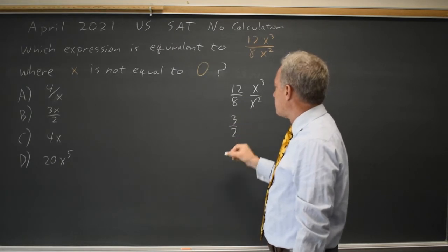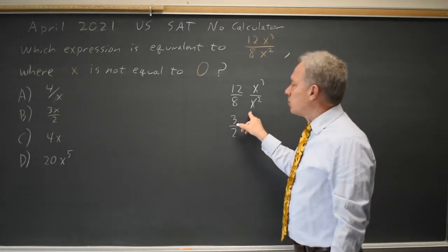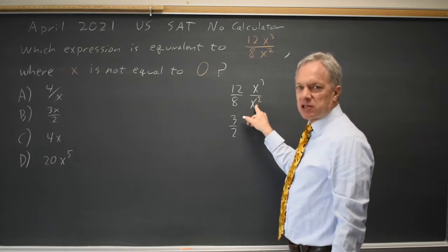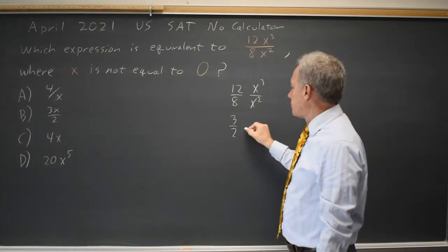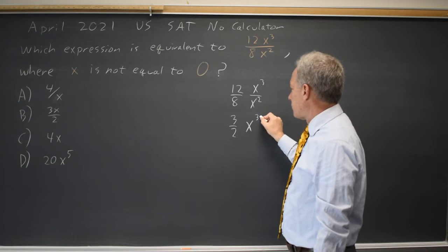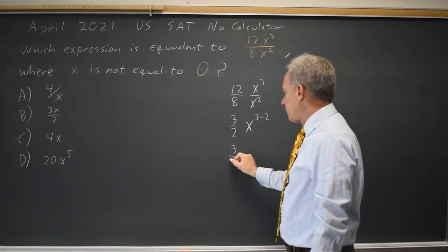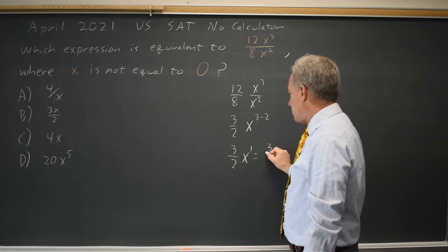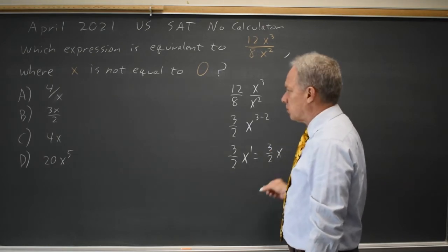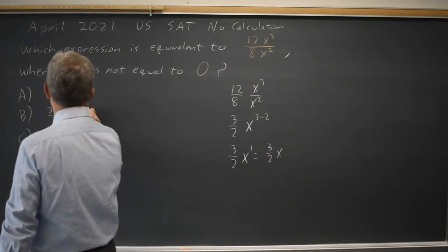x cubed over x squared for a quotient with powers of the same base, you subtract exponents of x. That's x to the 3 minus 2. That's 3 halves x to the 1, which is 3 halves x or 3x over 2. Choice B.